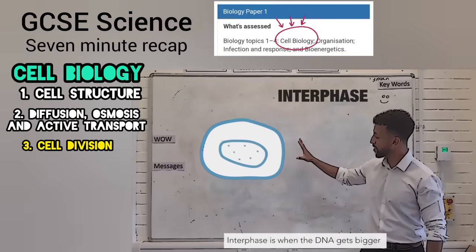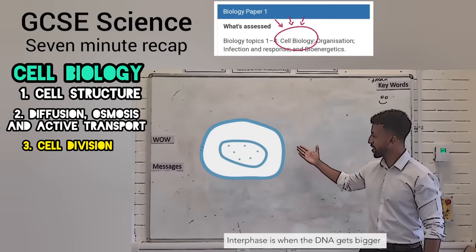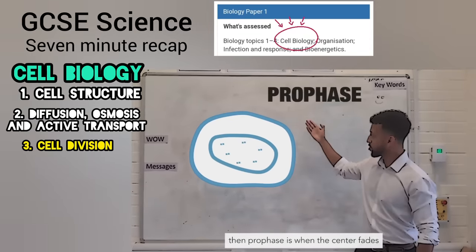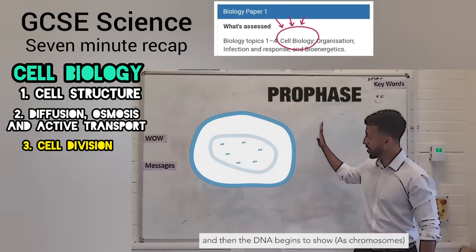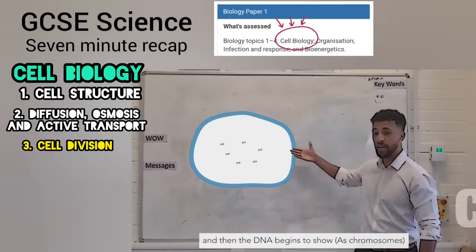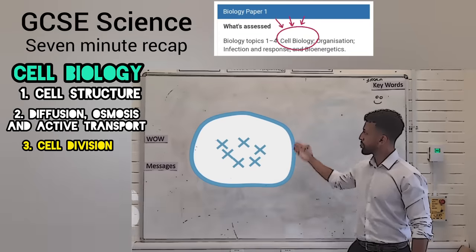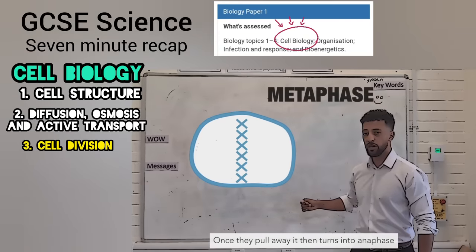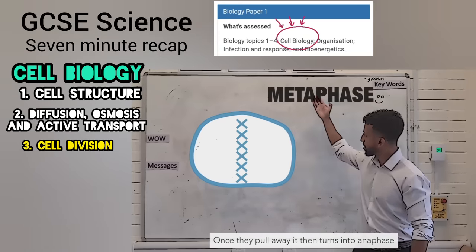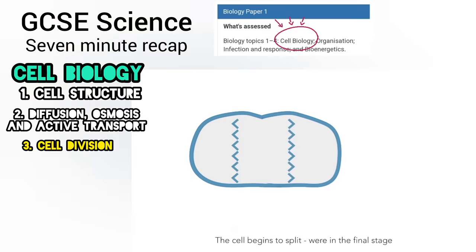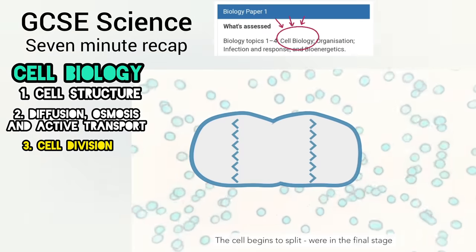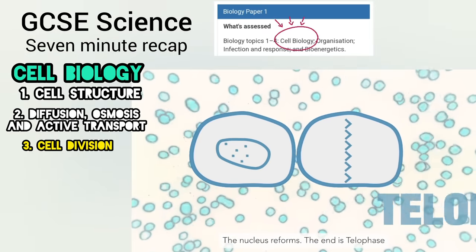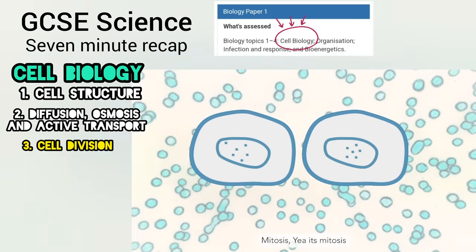Interphase is when the DNA gets bigger and the cell begins to grow. Then prophase is when the membrane fades and the DNA begins to show as chromosomes. In metaphase they all line up at the plate. Once they pull away it then turns to anaphase. The cell begins to split — we're in the final stage. The nucleus reforms — the end is telophase.